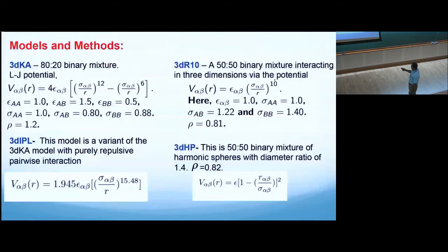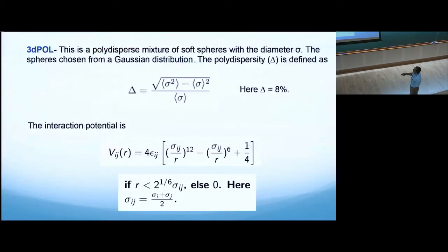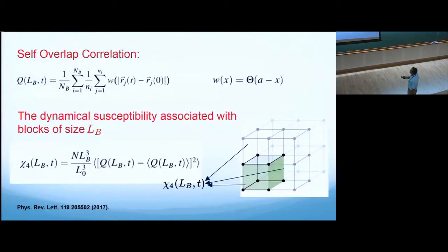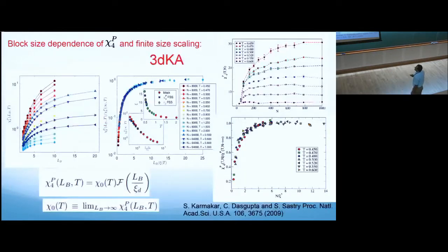Instead of different system size, now you are looking at how chi4 or any other quantity depends on block size and try to see whether some of this information can be extracted. These are different model systems we studied. These are all very good glass formers which have been studied for quite some time. This is one more system, a quality sphere system, which is somewhat closer to colloid glasses. What we are calculating is taking a big simulation box and dividing into smaller boxes, then calculating two-point and four-point correlation functions within these subunits and looking at how these quantities change with increasing size of this subunit.